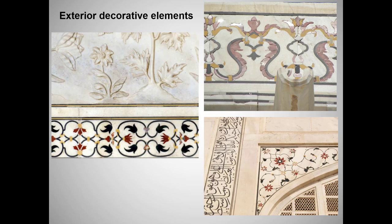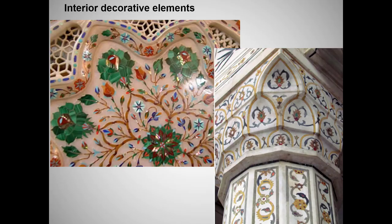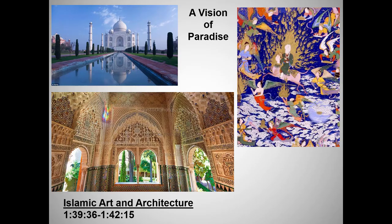The carved and inlaid exterior represents the height of Islamic craftsmanship, with superbly rendered calligraphy and vegetal arabesque patterns. Inside we move to the cenotaphs or raised tombs. The design of the interior is based around eight halls, reflecting the eight levels of paradise in Islamic teaching — this work is all about visions of paradise. The interior decorations continue the exquisite inlay work, employing precious stones such as malachite, the green stone you see here. Let's close this unit with the summary segment of our Islamic art and architecture video and one last glimpse of Islamic art's attempt to create visions of paradise.